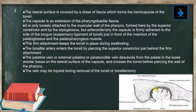The lateral surface is covered by a sheet of fascia which forms the hemi-capsule of the tonsil. The capsule is an extension of the pharyngobasilar fascia, which continues to form the so-called hemi-capsule of the tonsil.